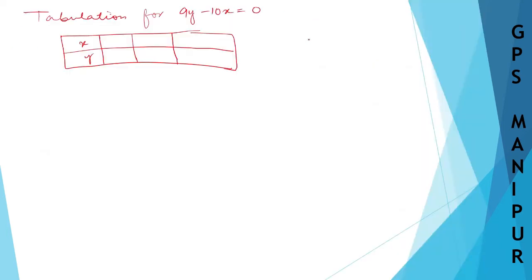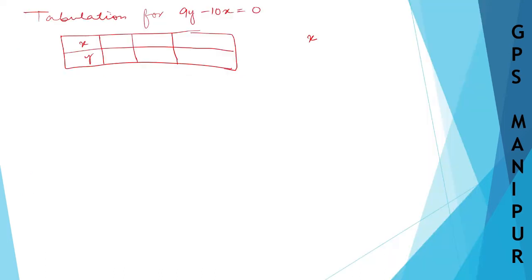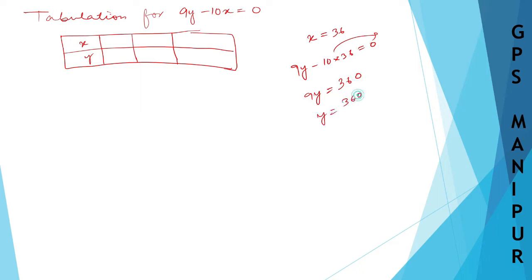If the measure of an angle is 36 degrees, then x = 36. Substituting: 9y minus 10 × 36 = 0, so 9y = 360, therefore y = 360 ÷ 9 = 40. So when x = 36, y = 40.